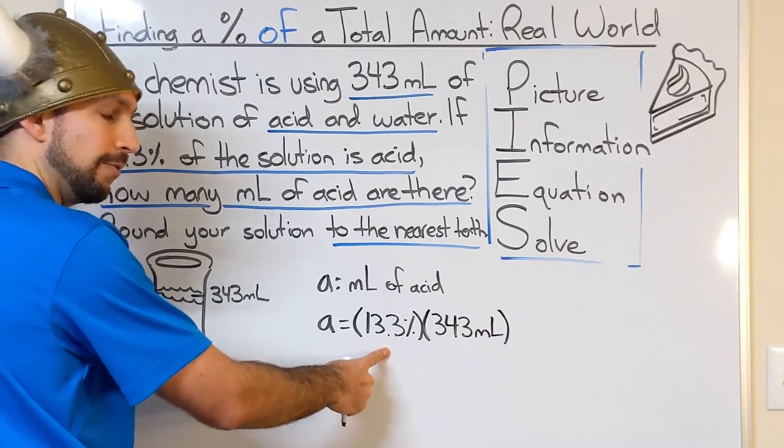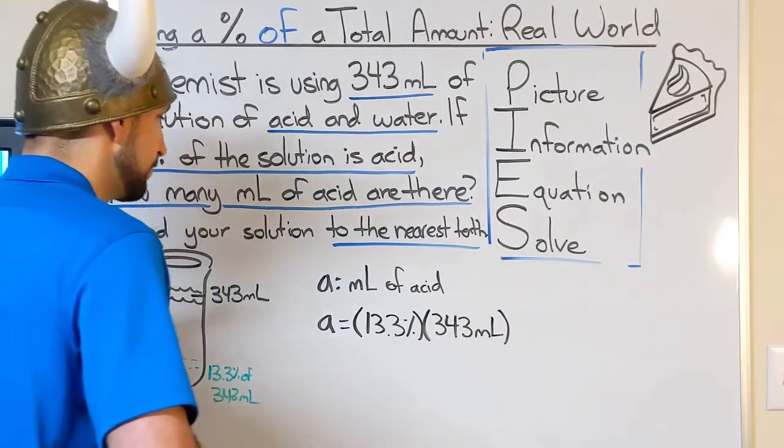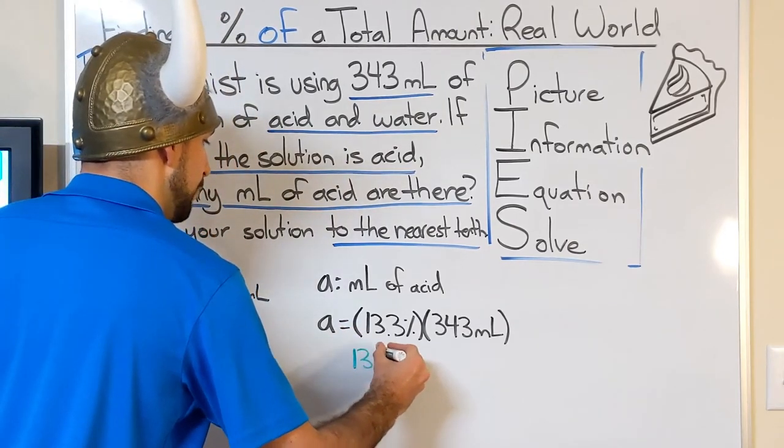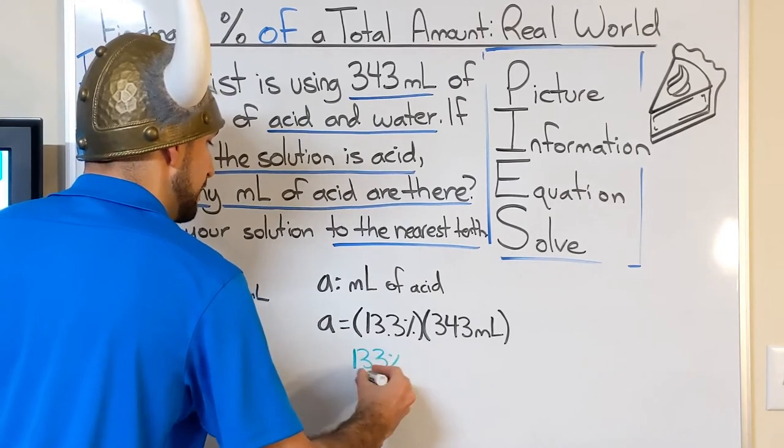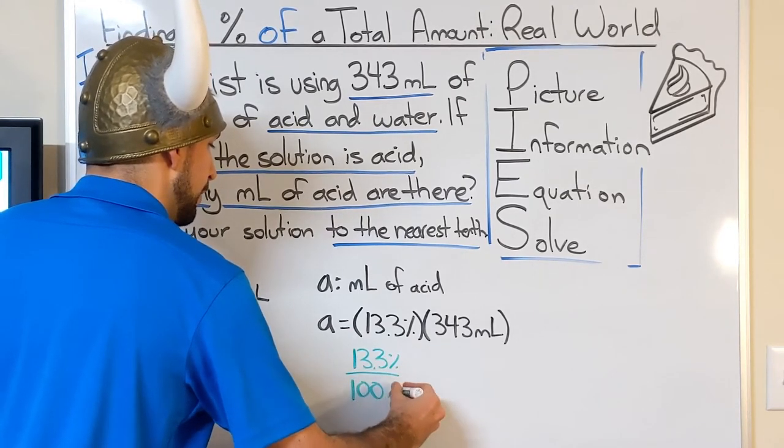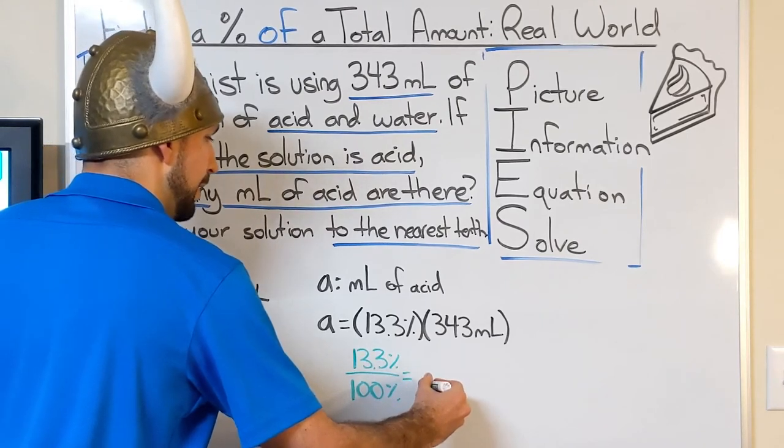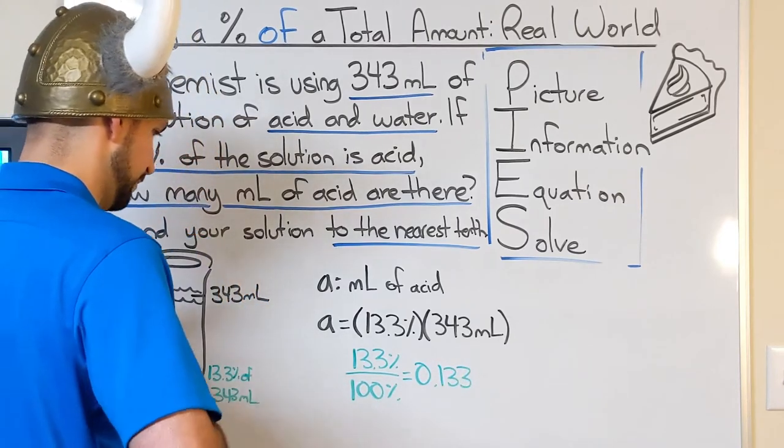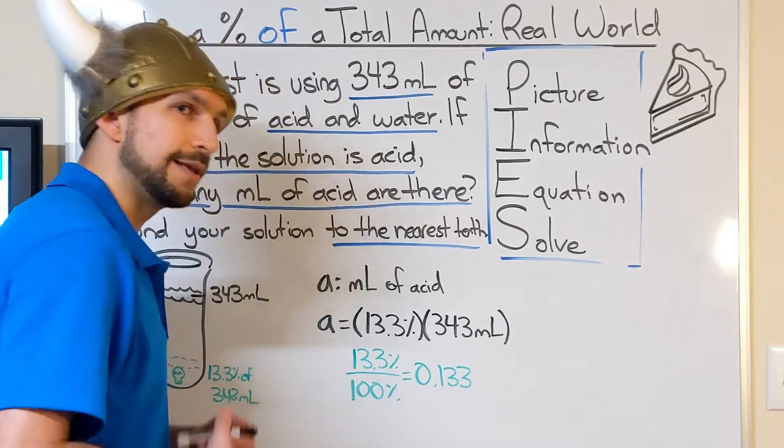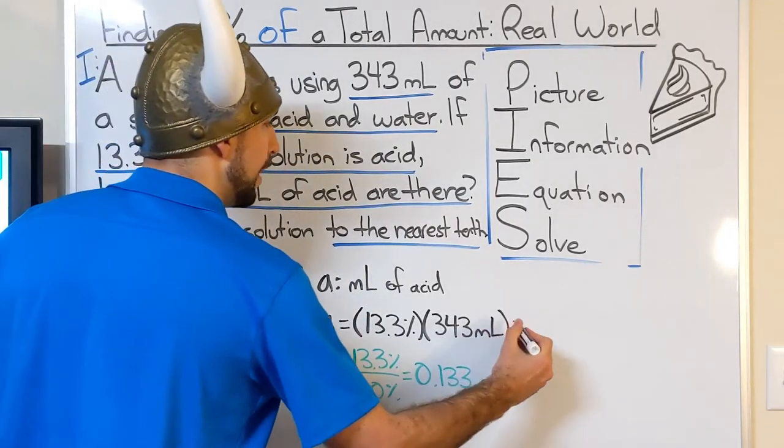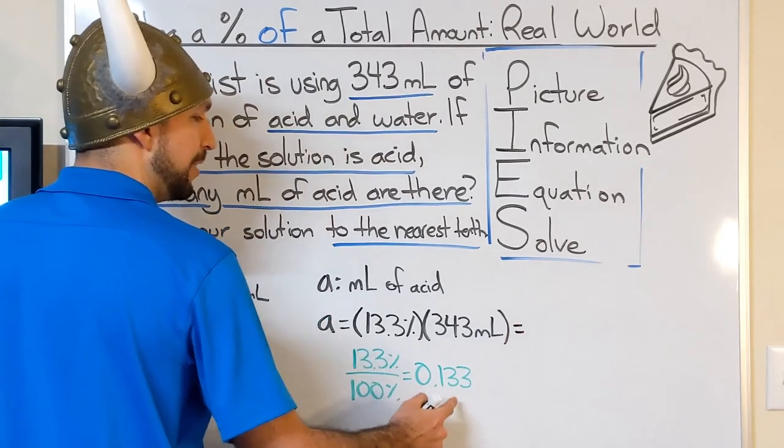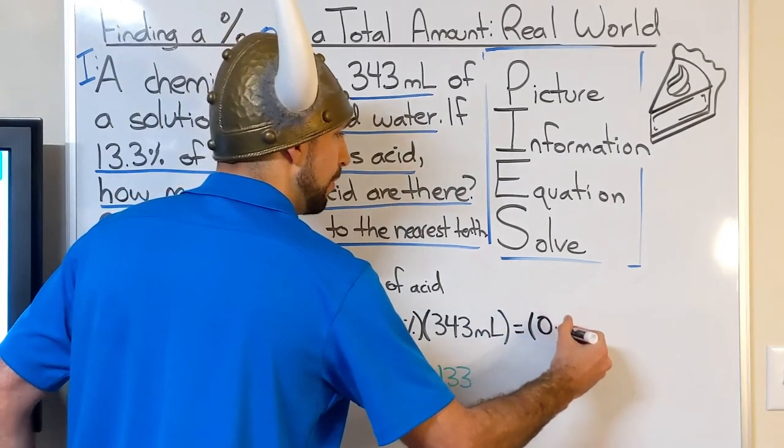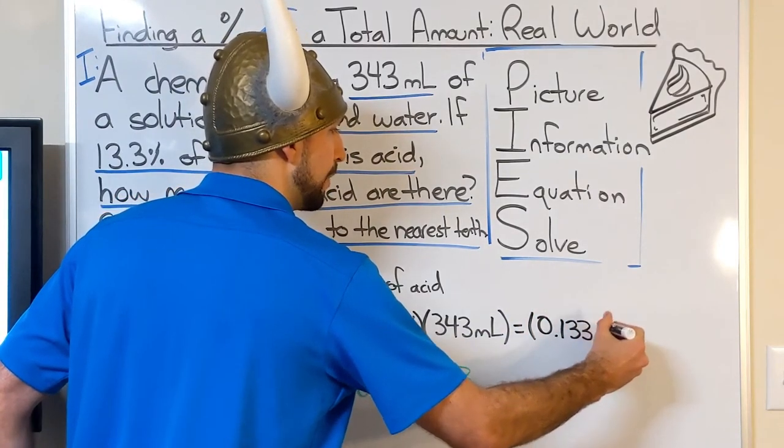Now again, we need to change this percentage to a decimal so that we can multiply these two. So there are 100% in a whole, and we've got 13.3% of 100%. So that will simply be 0.133. Now that we've got the decimal representation, we're ready to solve. I'm going to replace my percentage with its decimal equivalent.